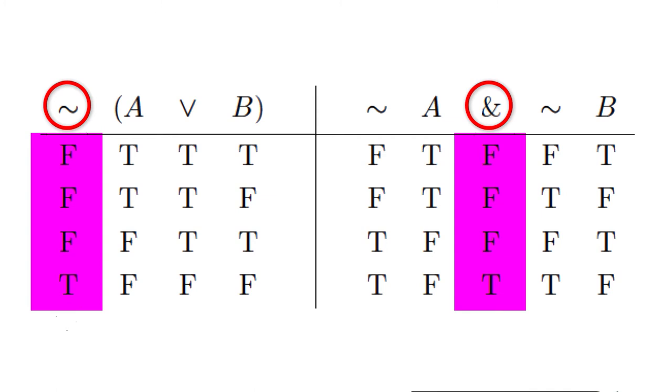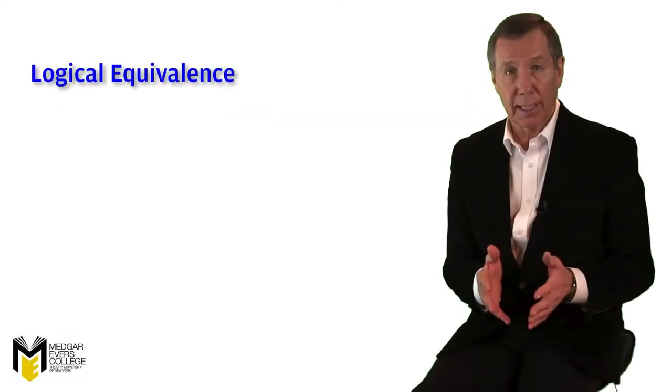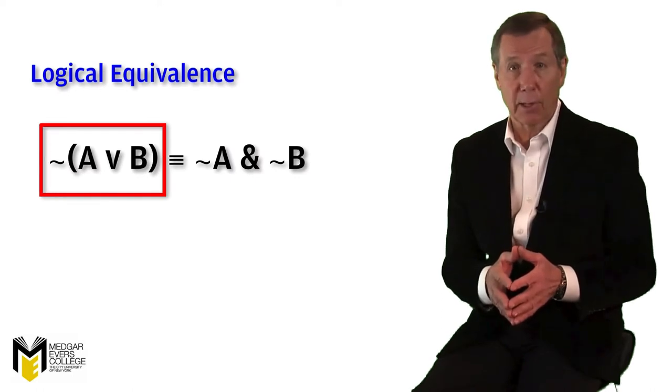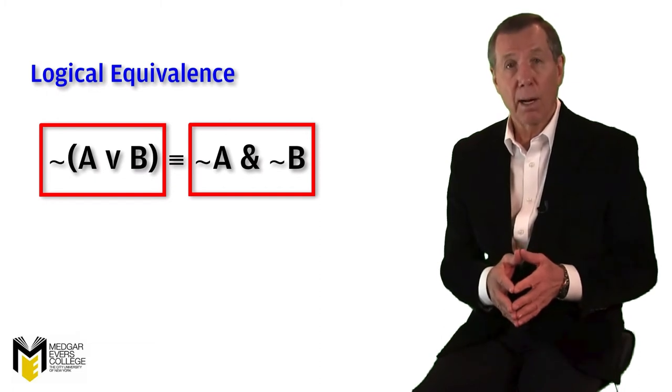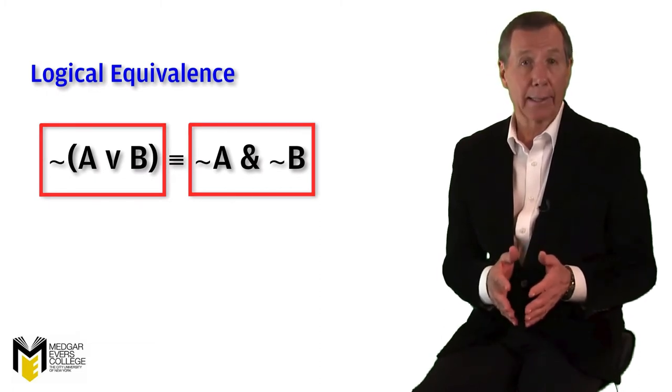So, if we wish, whenever we encounter the negation of a disjunction, as in, it is not the case that either A or B, we can immediately infer via DeMorgan that, therefore, both not A and not B.